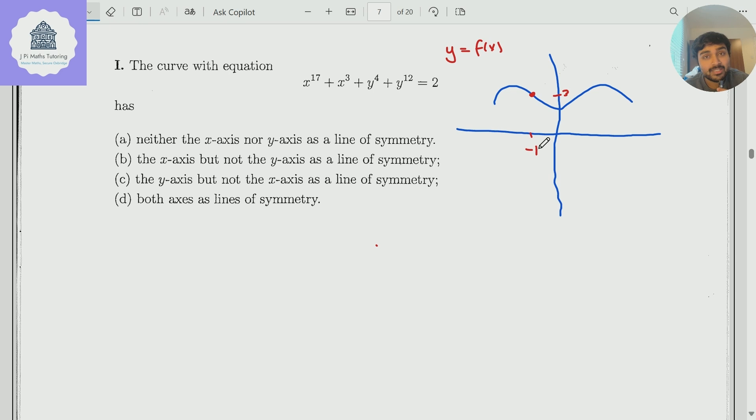then that means when I sub in minus 1 into the function, I get 3 as the output. But then by the symmetry, when I sub in 1, I should also get 3. And there's nothing special about minus 1 and 1 here. It should be true no matter what the x value is.